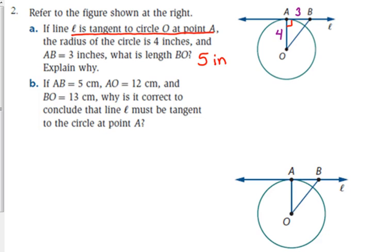BO is 5 inches because the legs are 3 and 4 in a right triangle, the hypotenuse has to be 5.